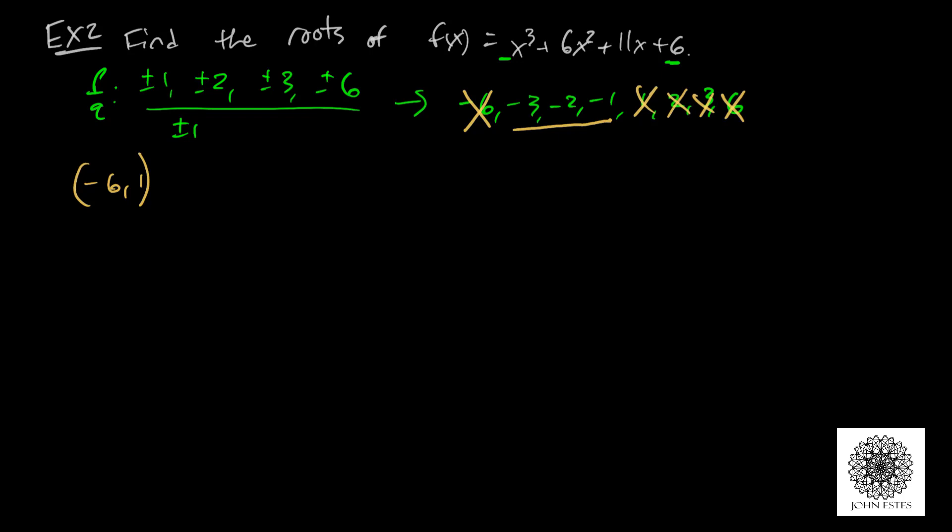I'm going to do synthetic division. Let's pick negative 1 for no particular reason, just a starting point. I bring down the 1. I get negative 1, add, gives me 5. 5 times negative 1 is negative 5. Add to get 6. This is looking pretty good because now I get a remainder of 0.